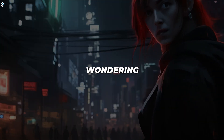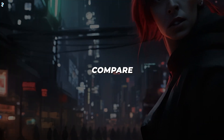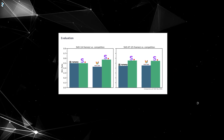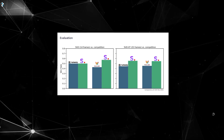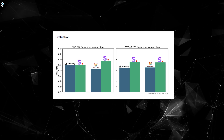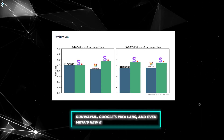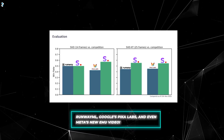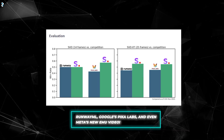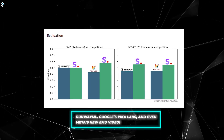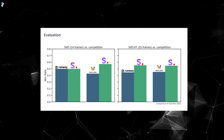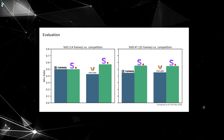Now I'm sure you're wondering how does Stable Video Diffusion compare to other video AI models out there? Stability AI rigorously benchmarked its approach, and it outperforms industry leaders like RunwayML, Google's Pika Labs, and even Meta's new EMU video model in critical areas like visual quality and text prompt accuracy. It achieves this breakthrough using only a fraction of the processing power required by other methods.